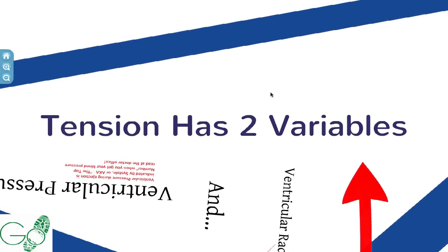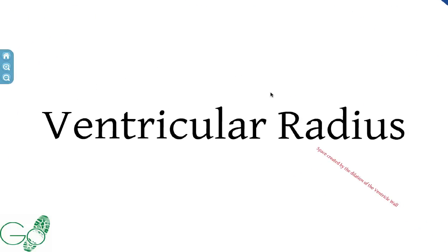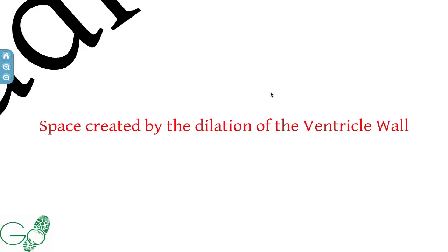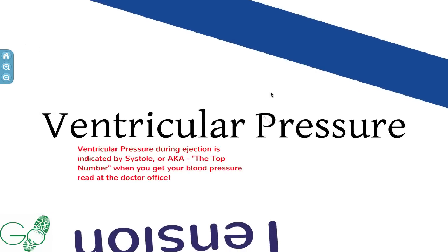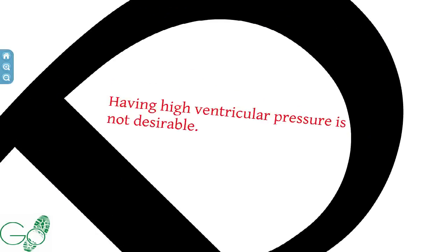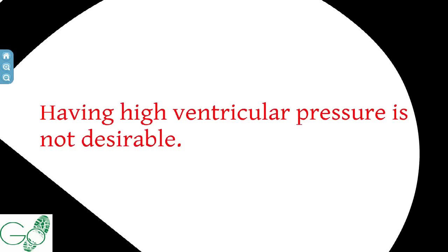The two variables that make up tension are ventricular radius — the space created by the dilation of the ventricle wall — and ventricular pressure. Ventricular pressure during ejection is indicated by systole, also known as the top number when you get your blood pressure read at the doctor's office.